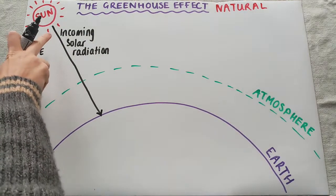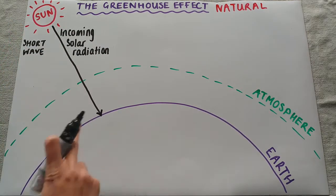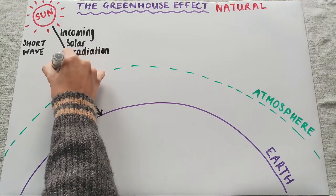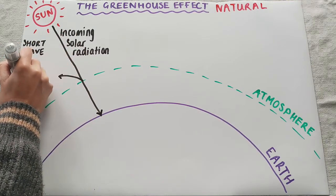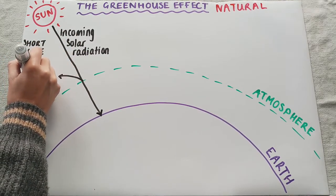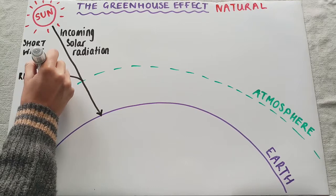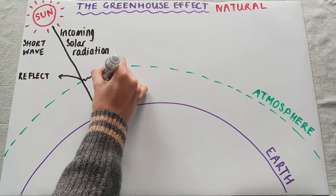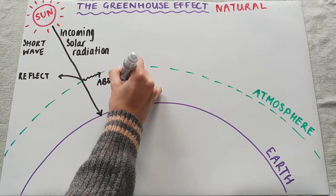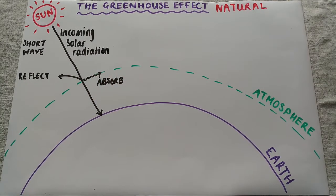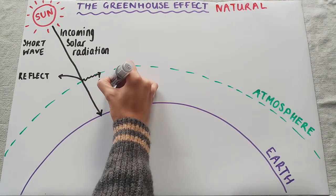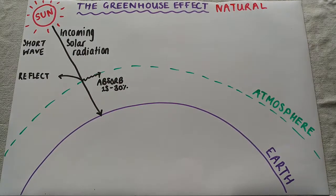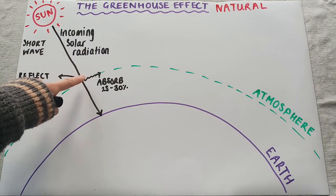Now there are a few things that happen — it doesn't just come straight from the sun to the earth and that's it. Firstly, when it reaches the atmosphere, some of it will be reflected, and some of it will be absorbed by the atmosphere. In terms of the percentage absorbed by the atmosphere, that is about 25 to 30 percent of the radiation coming from the sun.